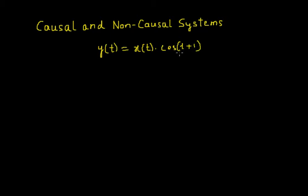The task is to determine if this system is causal or non-causal. To begin with, the definition of causality says that a system is said to be causal if its output at any time depends on present or past values of the inputs only.